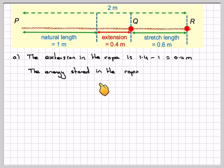The energy stored in the rope is lambda x squared over 2L, which we just showed you. So it would be 12, the modulus of elasticity, times 0.4, that's the extension, divided by 2 times the original length of the rope, which gives you 0.96 joules.